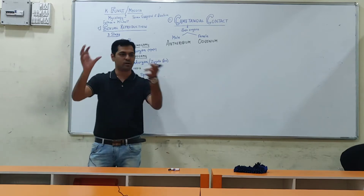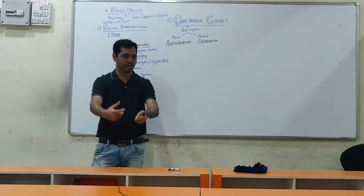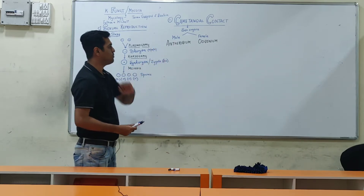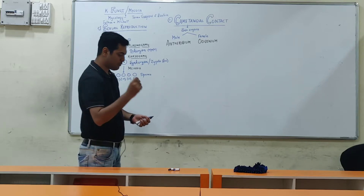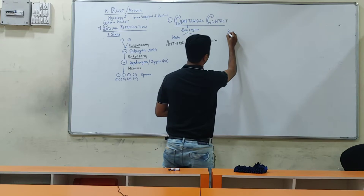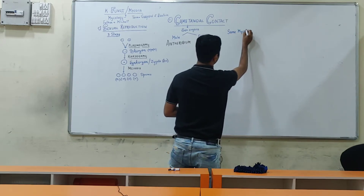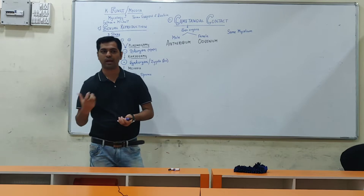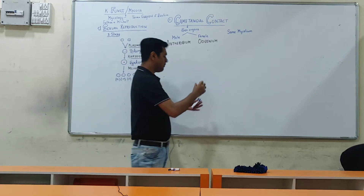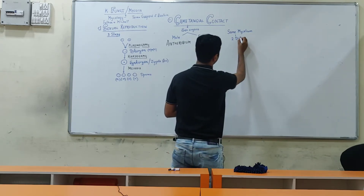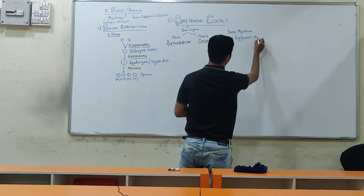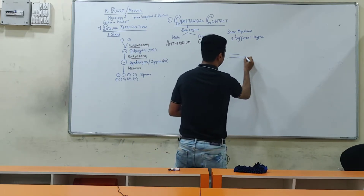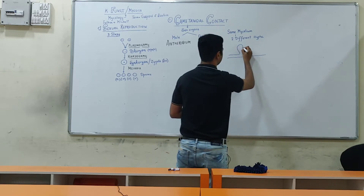Thallophytes means organisms whose body is not differentiated. Their body is called mycelium, and body parts are not separately named as root, stem, or leaf. In thallophytes, the female sex organ is called oogonium. In gametangial contact, this entire process occurs on the same mycelium — within one fungus body. If it is the same mycelium, this is called a homothalic mycelium, but there are two different hyphae.